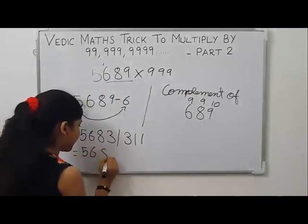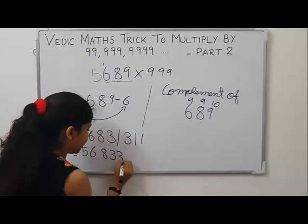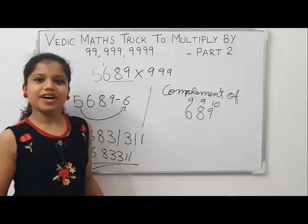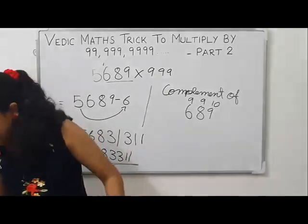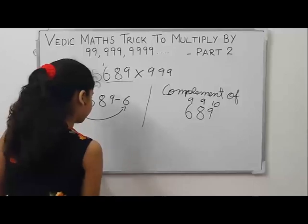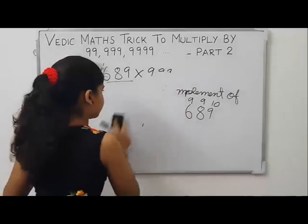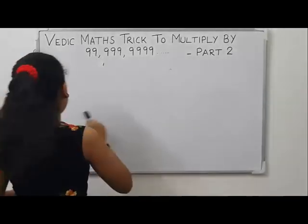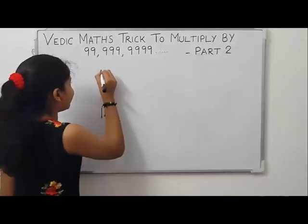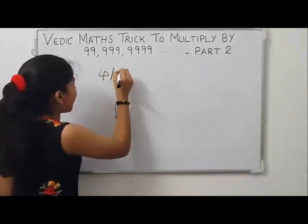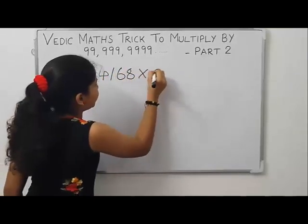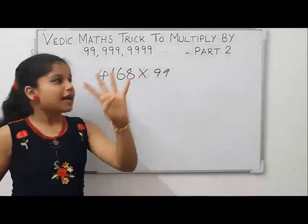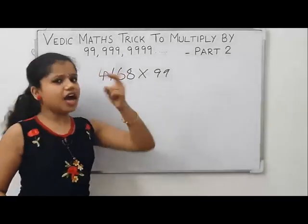So our answer is 5,683,311. This is our answer. Now let us take another example. Let us take 4168 into 99. Here the number of digits are four but the number of nines are only two.